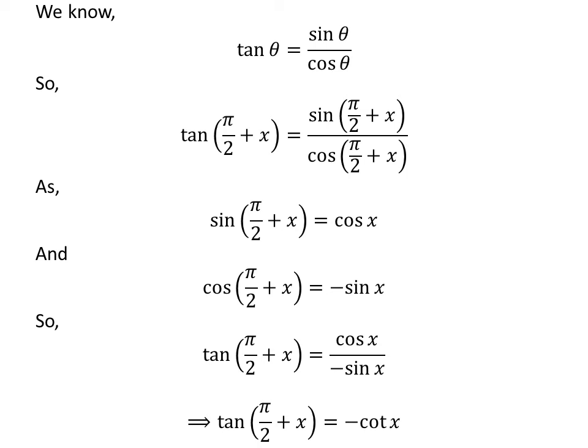We know cosine of x upon minus sine of x is equal to minus cotangent of x. So, tangent of half of pi plus x is equal to minus cotangent of x.